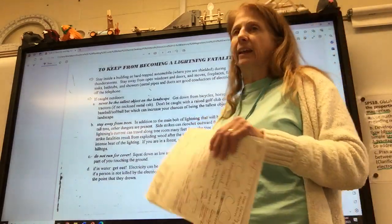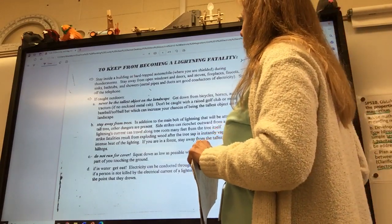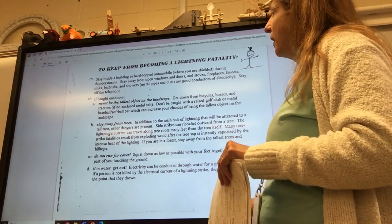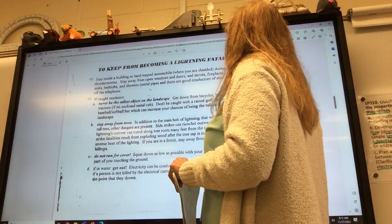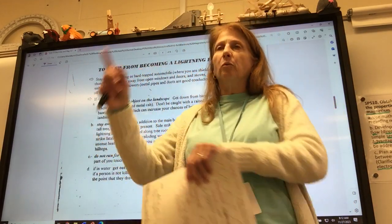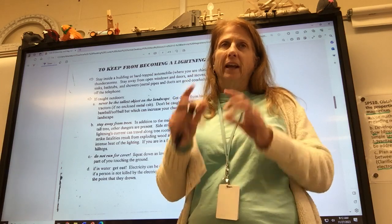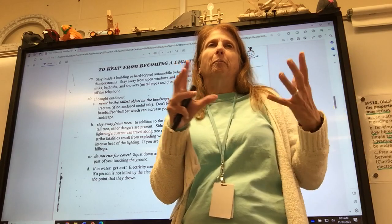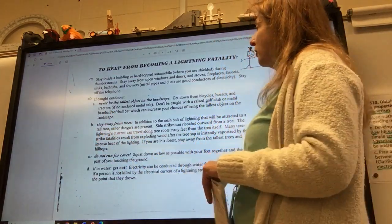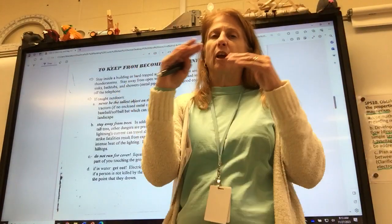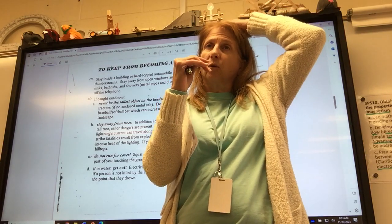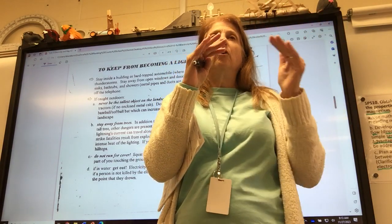So now how to keep from being a lightning fatality. If you can, stay inside of a building or a hard-topped automobile where you're shielded during a thunderstorm. Stay away from open windows and doors and stoves and fireplaces and faucets, sinks, bathtubs, and showers. Metal pipes and ducts are good conductors of electricity. Stay off the telephone. I had a student once. She was doing dishes during a lightning storm and got shocked, because lightning hit somewhere else. It went through the water and the pipes, and she got shocked doing dishes. Try not to be the tallest object on the landscape. What lightning does is it likes to hit whatever is tallest or round. So if you're standing out in the middle of a field, you're the tallest, and look at your little round head right there, ready to get hit by lightning.